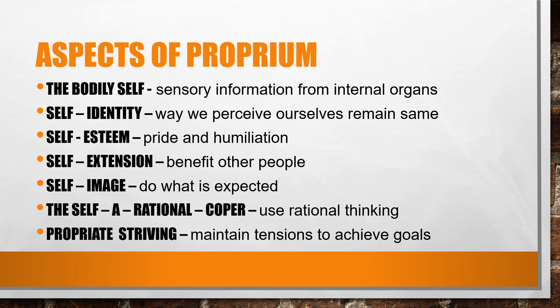Appropriate striving starts from age 12 onwards. We strive for a college degree, we try to become the best athlete in a given sport — basically, we try to maintain tensions to achieve important goals. To Allport, this is the highest form of selfhood. All these aspects of proprium do not function separately; they can operate simultaneously.